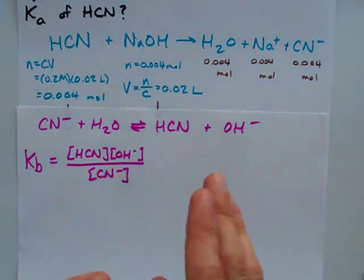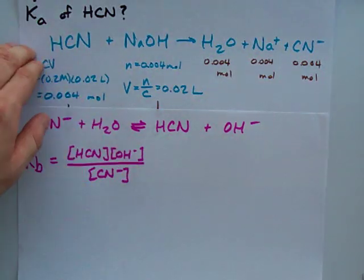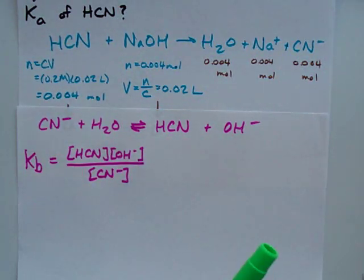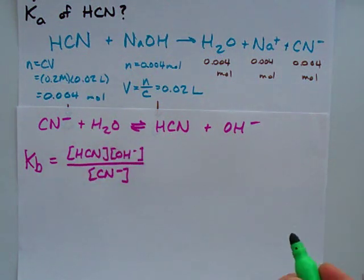Now, what we need to do is solve for KB, because after all, that will help us solve for KA. If I was to do an ice table with CN- and H2O, well, I wouldn't care about H2O. HCN and OH-.